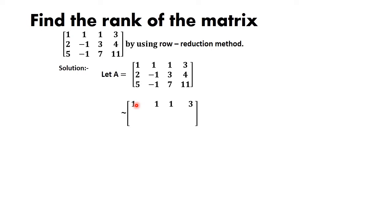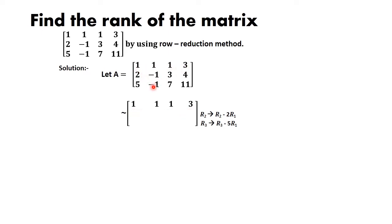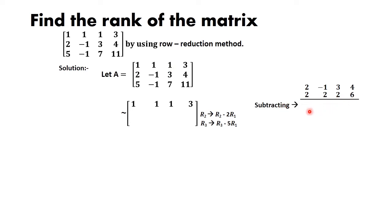I am going to use the operation R2 = R2 - 2R1. Keep the first row as it is. For R2: write R2 elements [2, -1, 3, 4], then multiply R1 elements by 2 to get [2, 2, 2, 6]. Subtracting those two gives [0, -3, 1, -2]. So R2 becomes [0, -3, 1, -2].